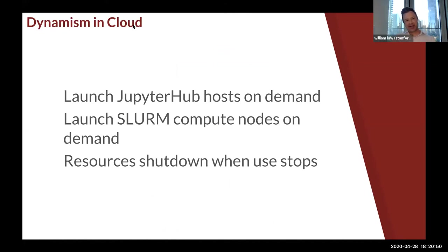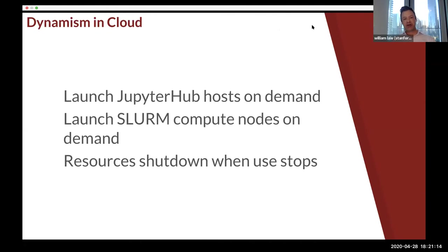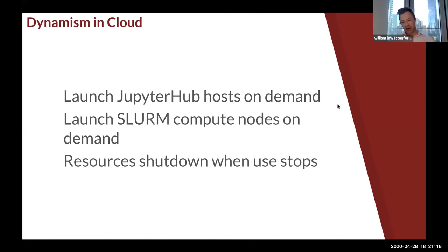One of the key things is dynamism in the cloud — we need to be able to both start and stop things and have everything be elastic. JupyterHub and Slurm both allow us to dynamically start and stop workloads in the cloud without users having to do anything. In JupyterHub, users literally just log on and it will start up new nodes for them. With Slurm, nodes are started as users submit jobs. The key thing is resources shut down when users aren't using them, which helps control costs.